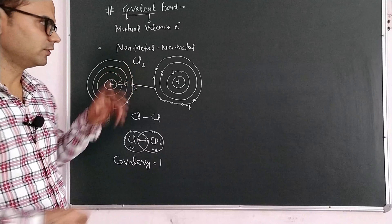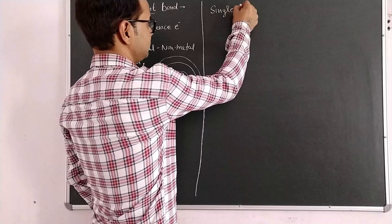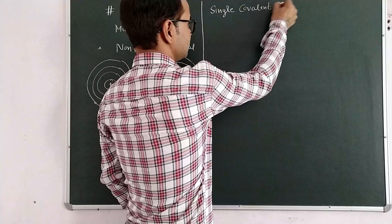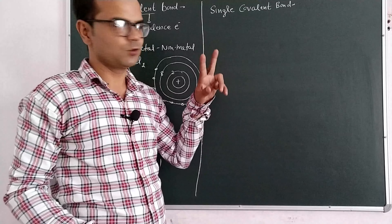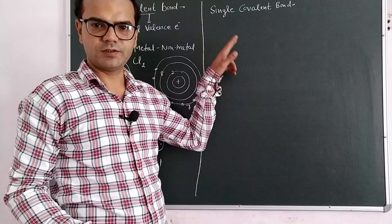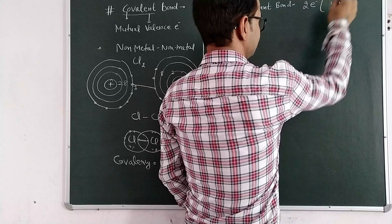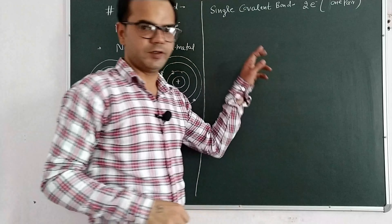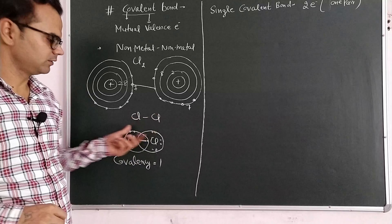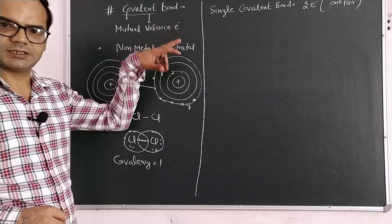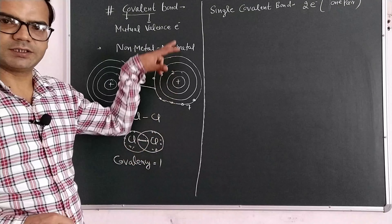We have three types of covalent bond. First is a single covalent bond. A single covalent bond is formed when two electrons are shared — one from each atom. If one pair of electrons is shared, then a single covalent bond is formed. As we discussed in the chlorine molecule, one pair of electrons or two electrons are shared, which is why there is one bond. This is called a single covalent bond.